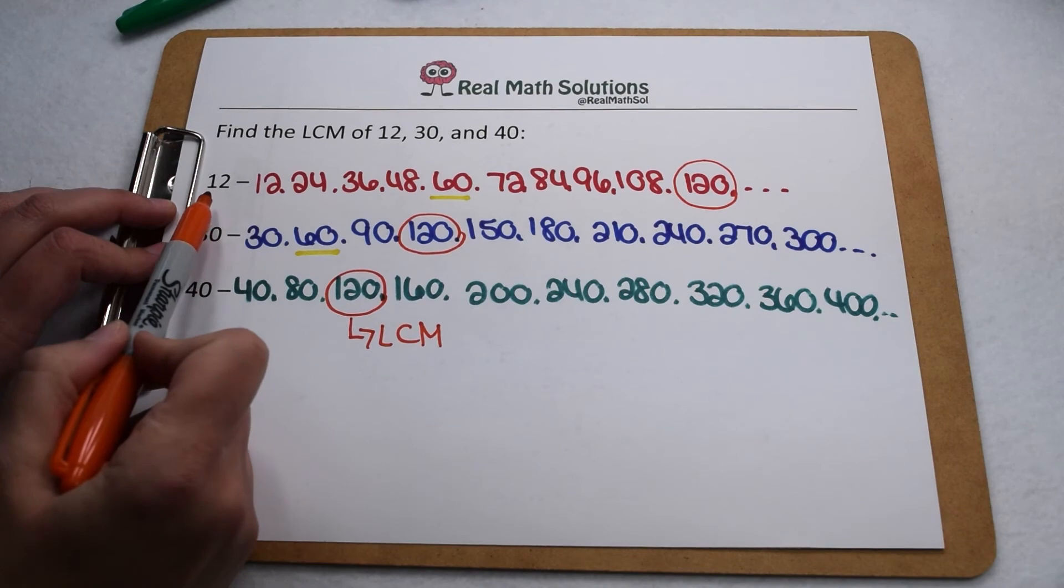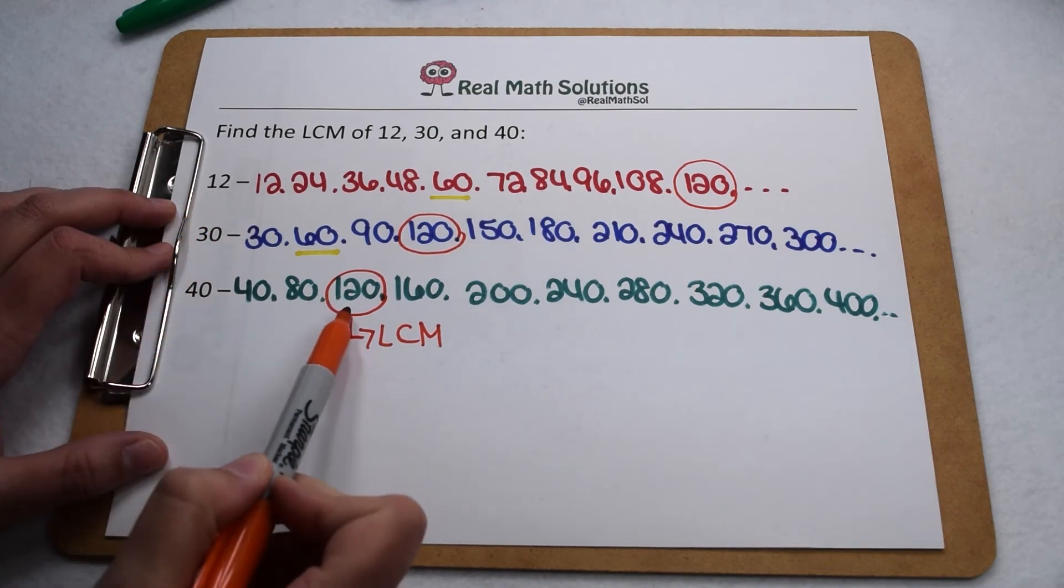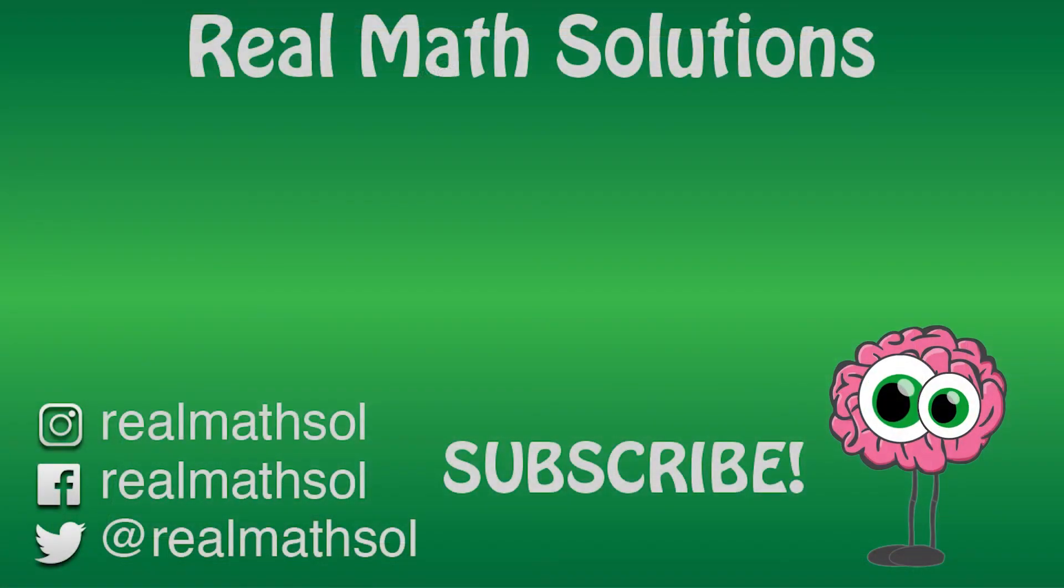So the least common multiple of 12, 30, and 40 is 120. Check out the other videos in our playlist and don't forget to click on subscribe. Thanks for watching.